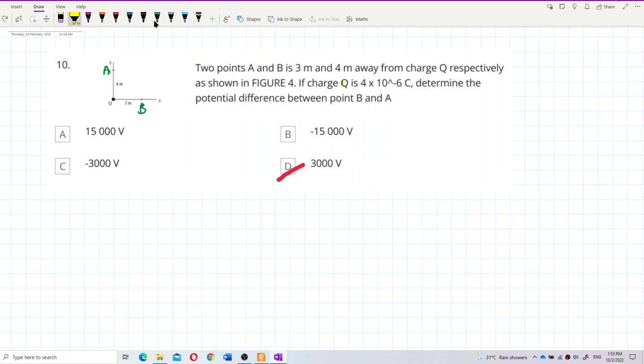There is a charge here, consider it is a positive charge. So there is a positive charge here Q, and this is 4 meters away and this is 3 meters away.